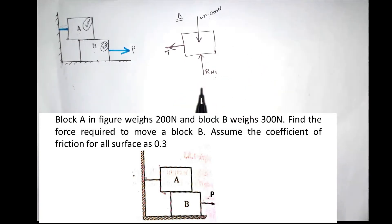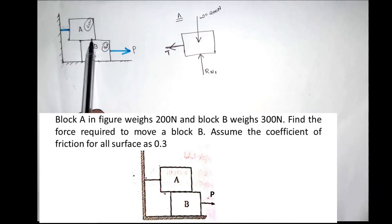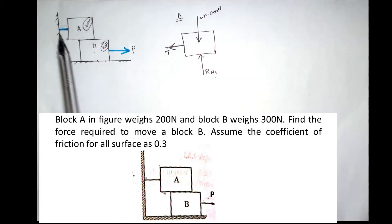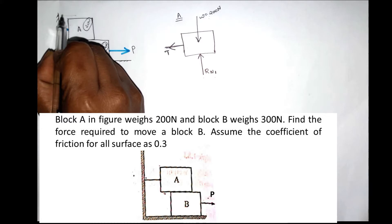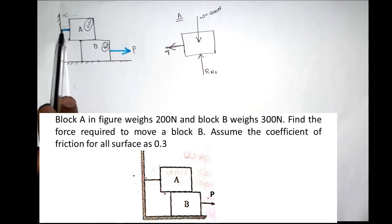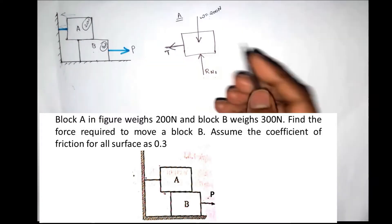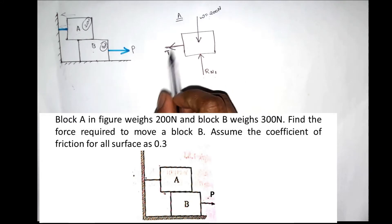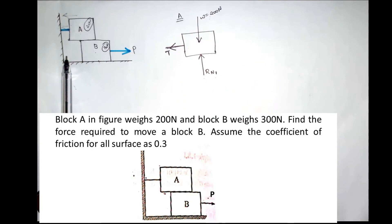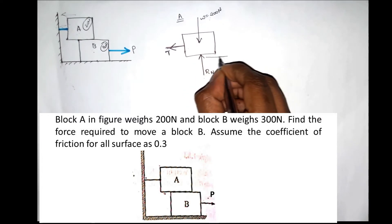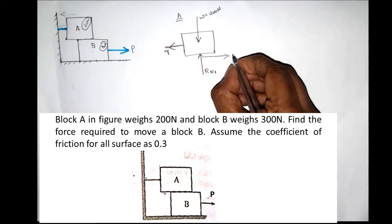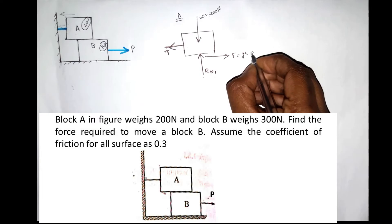We mark the friction force on the block. The block is in contact with another block. Since Block A tends to move right, the friction force acts in the opposite direction — to the left. The friction force F equals mu multiplied by Rn1.